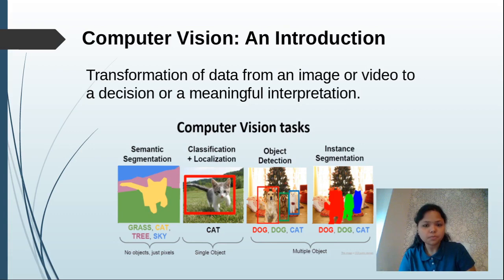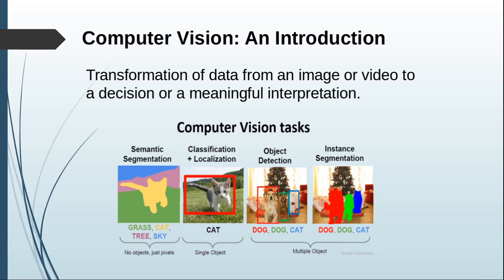Now I will talk about few basic tasks that we can accomplish using computer vision methods. The first example is semantic segmentation. As you see in this image, every pixel is labeled as either grass, cat, tree, or sky. This is what we try to accomplish using semantic segmentation.